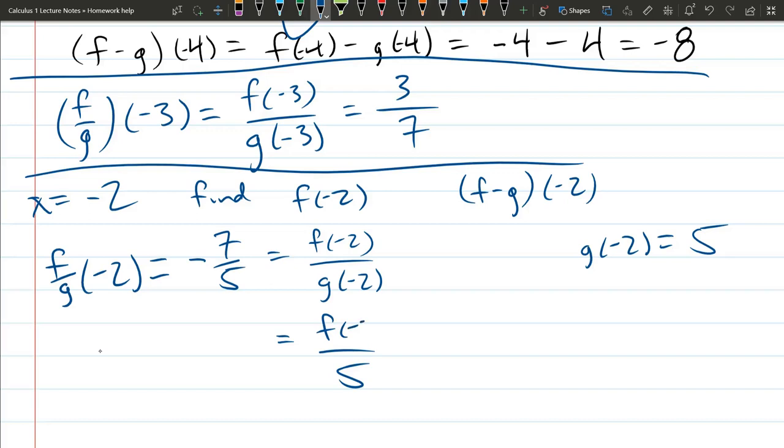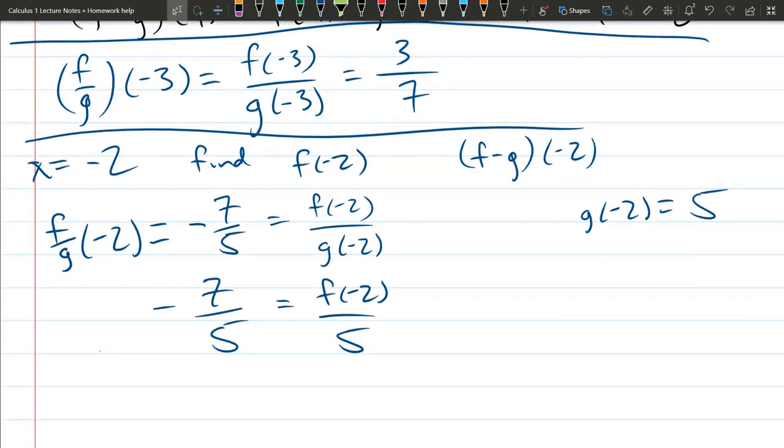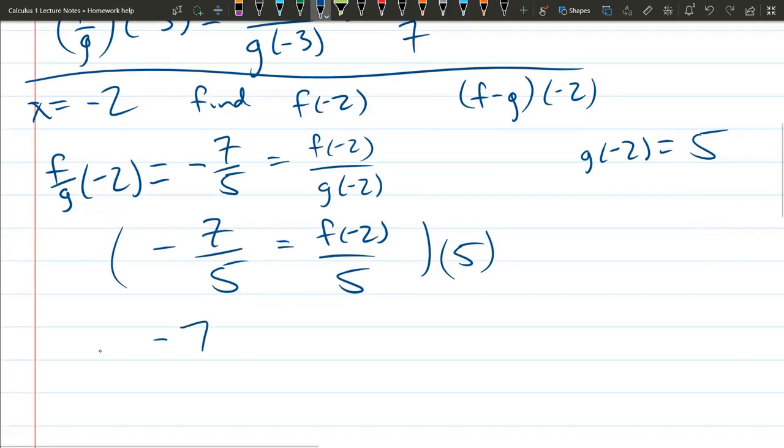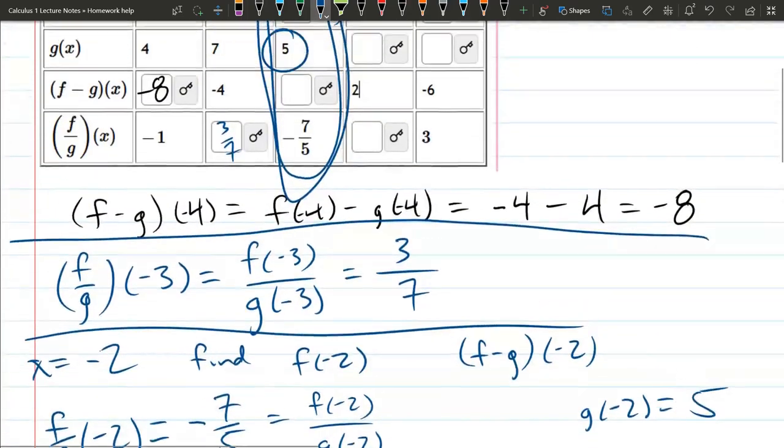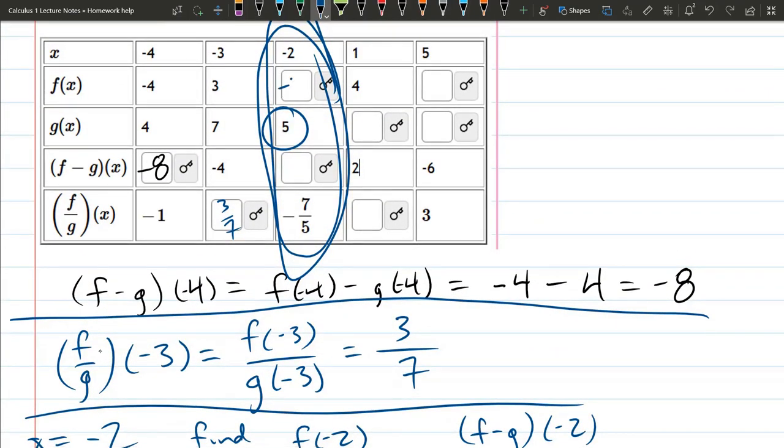I still don't know f of negative 2. However, at this point, I do have enough information to determine f of negative 2. So let's multiply both sides of this equation by 5. Cancels the fractions out. Negative 7 is f of negative 2, so now I know f of negative 2 is negative 7. And that should be enough to fill in this blank. And what's that one? That's just f of negative 2 minus g of negative 2, so that's negative 7 minus the 5. And what's that? Negative 12. So that will go right there.